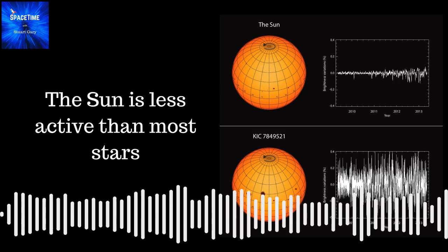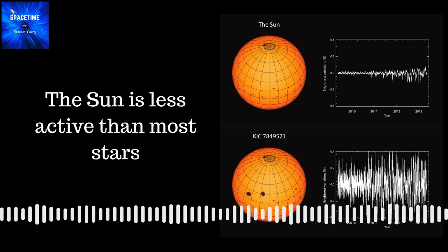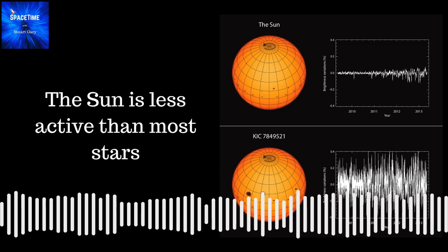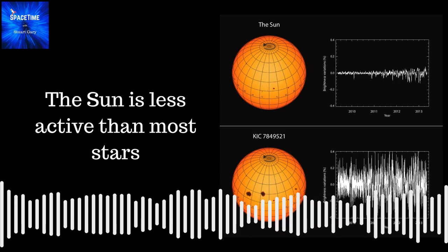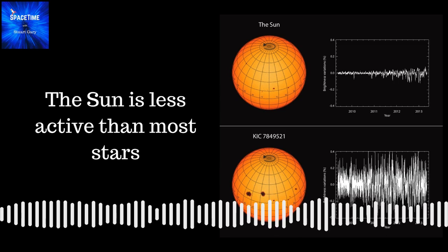Or for that matter, the roughly 12 billion years it's expected to be on the main sequence? So to find out, astronomers looked for other stars with similar characteristics to our Sun.